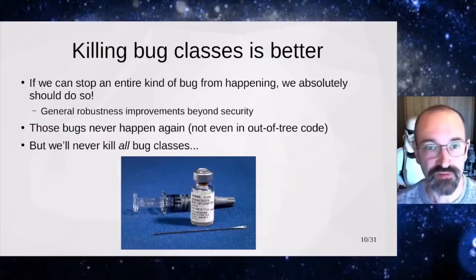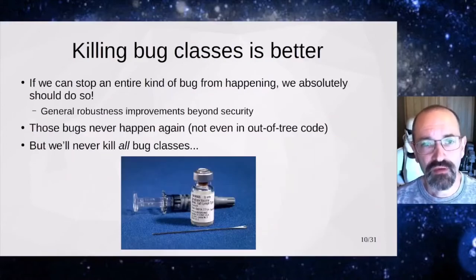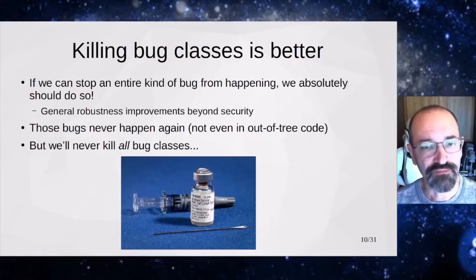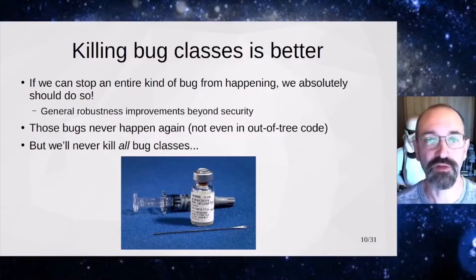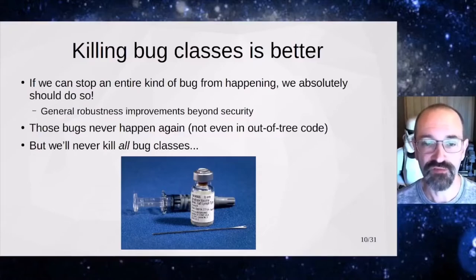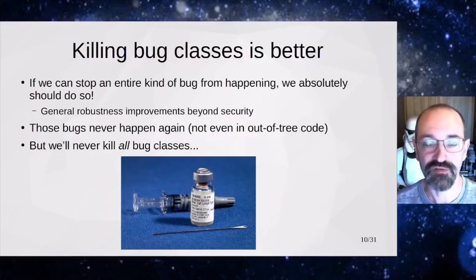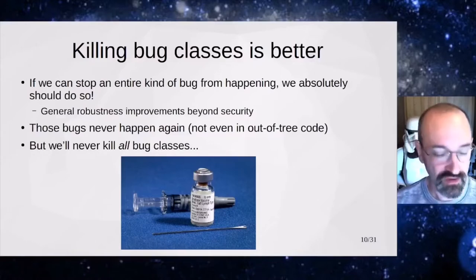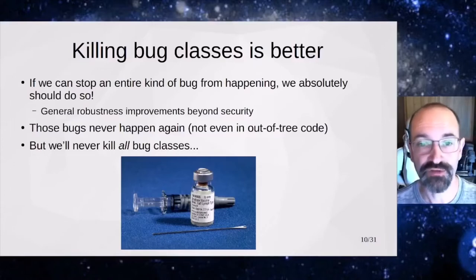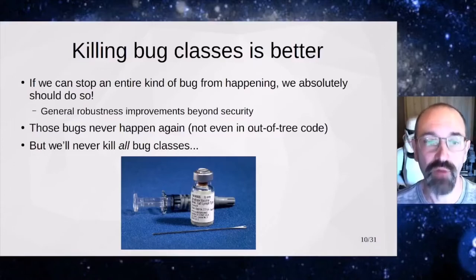We want to kill entire classes of bugs. This is more than just about the security piece — it improves robustness generally. If we can kill an entire class of bugs, those that are security-relevant are a subset; the rest exist as behavioral anomalies. The general robustness of the kernel is improved when we're killing bug classes. If we kill the class, they can't be reintroduced, which is really the only way to get ahead of the whack-a-mole situation.